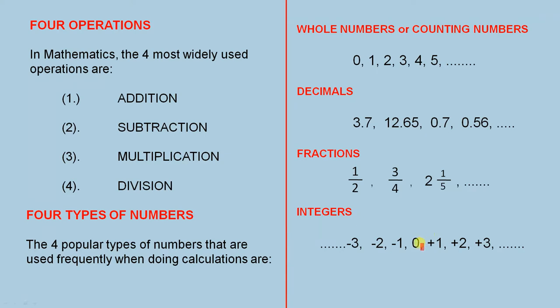And integers. Integers are whole numbers, including the negative numbers. So we have the negative numbers, the positive numbers and zero. They constitute the integers.